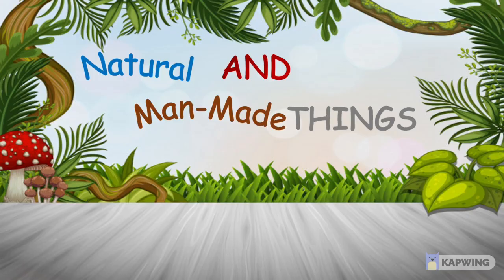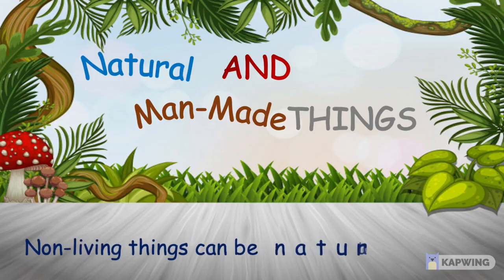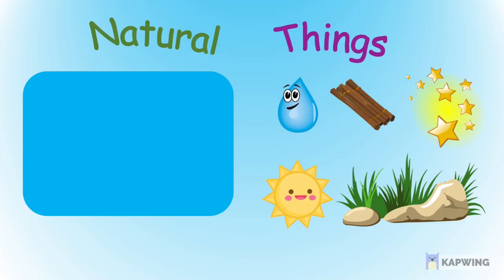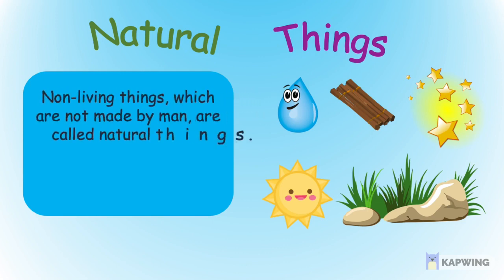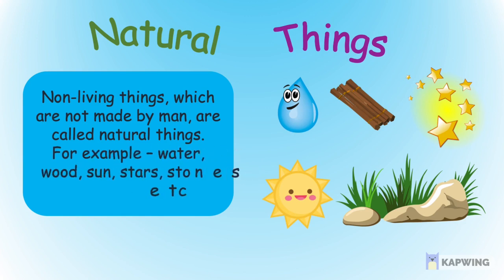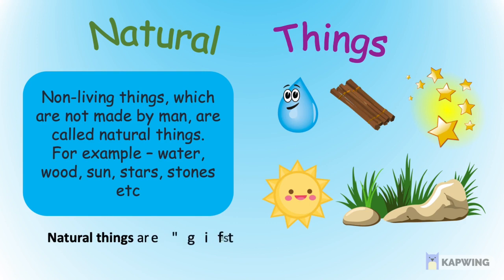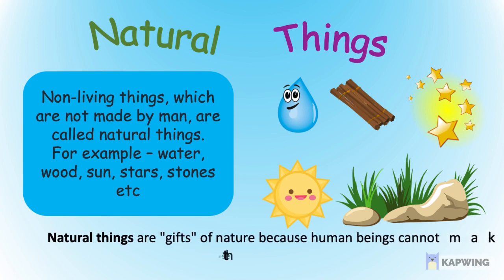Natural and man-made things. Non-living things can be natural or man-made. What are natural things? Non-living things which are not made by man are called natural things. For example, water, wood, sun, stars, stones, etc. These are things that are produced by nature. Natural things are gifts of nature, because human beings cannot make these things by themselves.